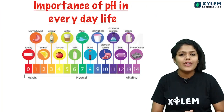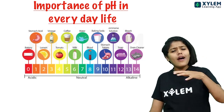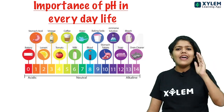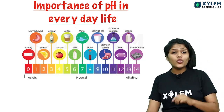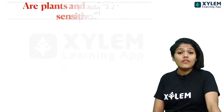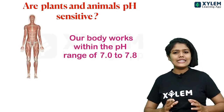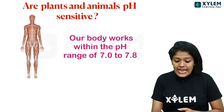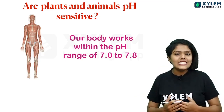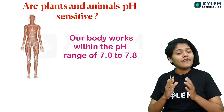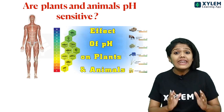Now let's move to the importance of pH in our everyday life. First, plants and animals are pH sensitive. Human beings need a pH range of 7.0 to 7.8. We must maintain our body's pH within this range. Even plants, animals, and fishes — all living organisms — need a specific pH range for their survival.